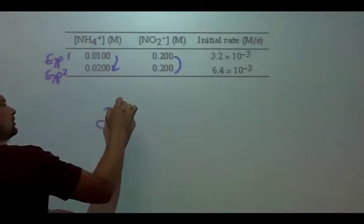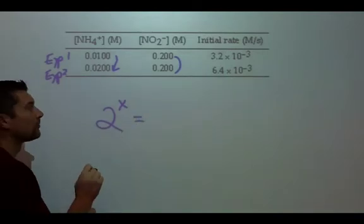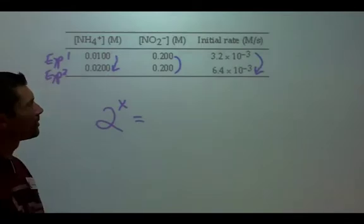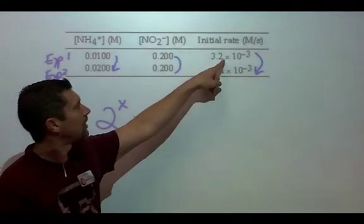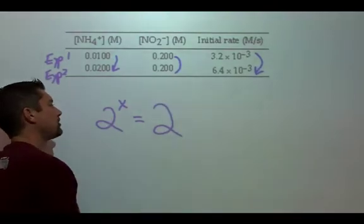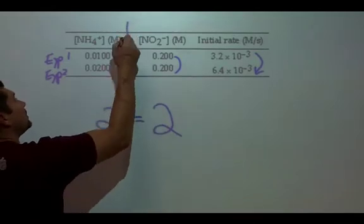So I'm going to put a two to the X right here equals what happens to our rate. The rate also doubles. How do I know that? This divided by that is two. This divided by that is two. So the rate also doubles. Therefore, my exponent is to the first.